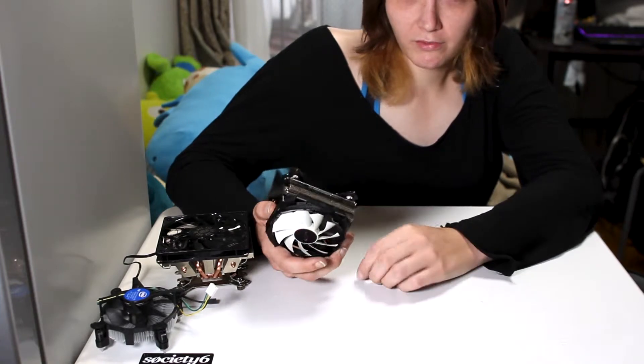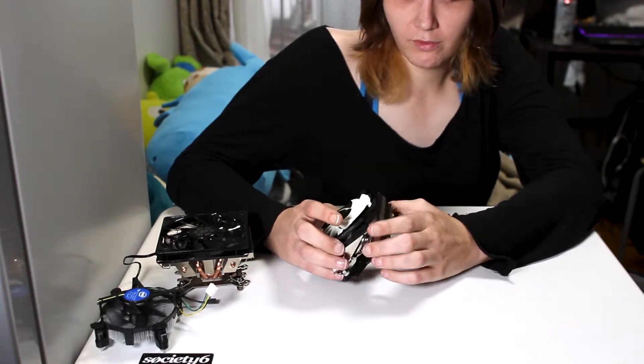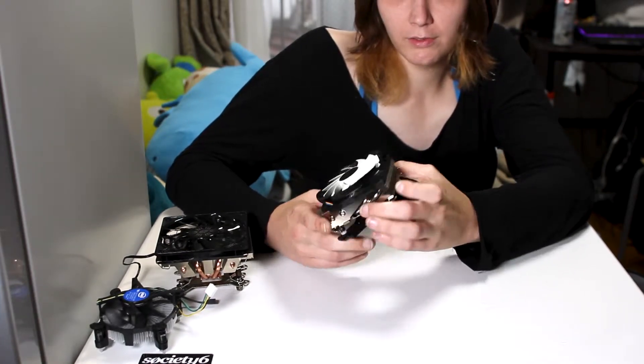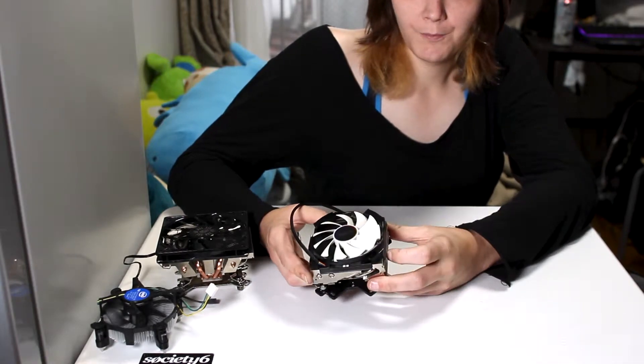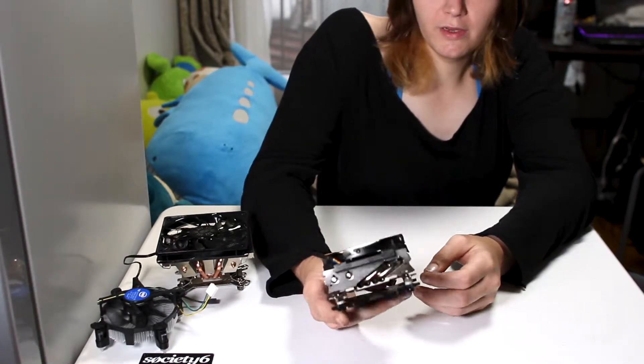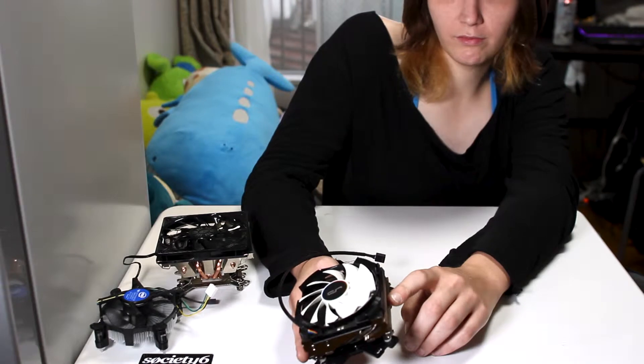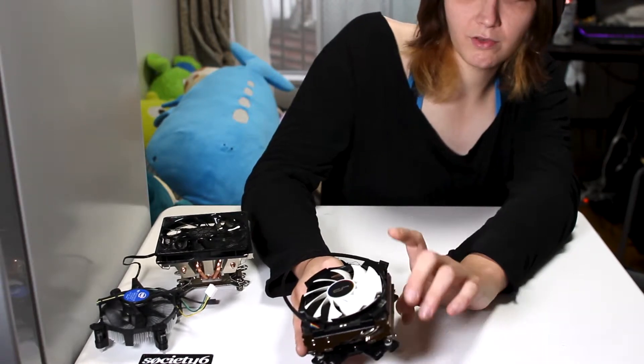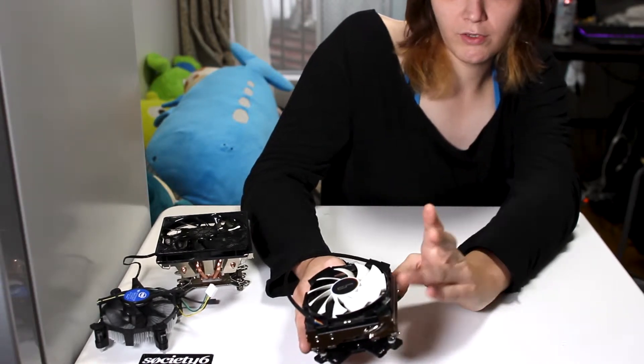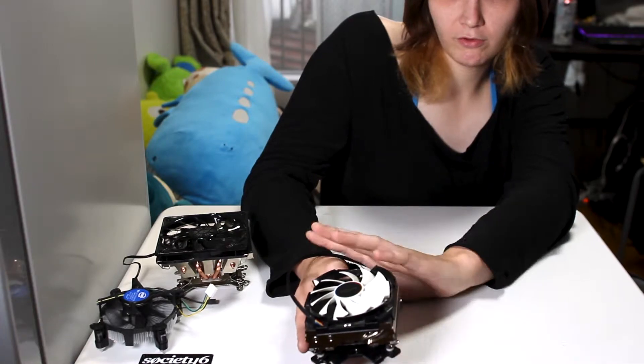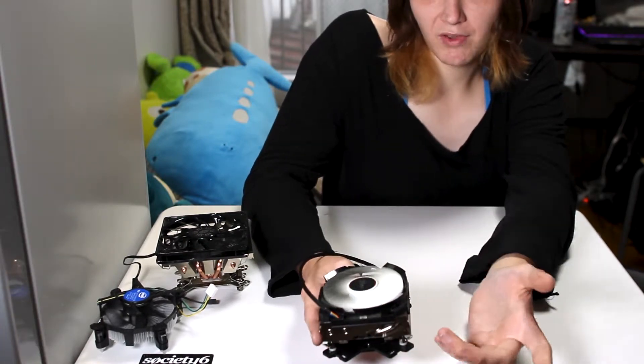The Cryorig C7 does come in a couple different variations. This is the standard one right here. There is a copper one that's exactly the same as this except it's all copper. There's no nickel plating, there's no aluminum, it's just all copper. It has the same fan on it.